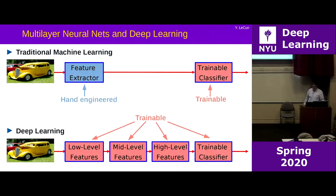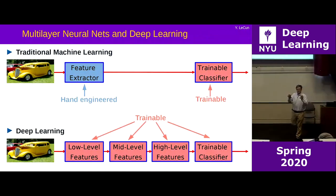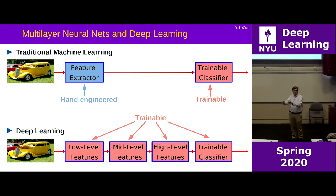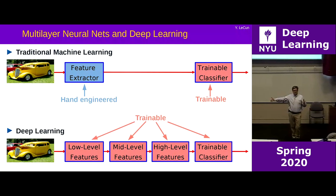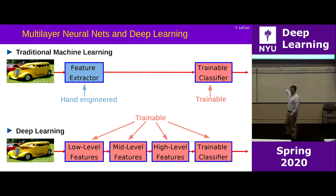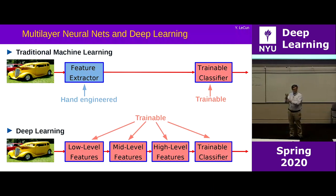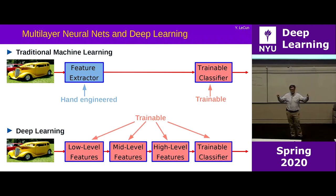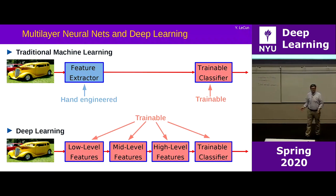What deep learning brought to the table is the idea that instead of a two-stage process where one stage is built by hand, you learn the entire task end-to-end. You build your pattern recognition system as a cascade of modules, all with tunable parameters, all with some non-linearity, and stack multiple layers — which is why it's called deep learning. Then you train the entire thing end-to-end.